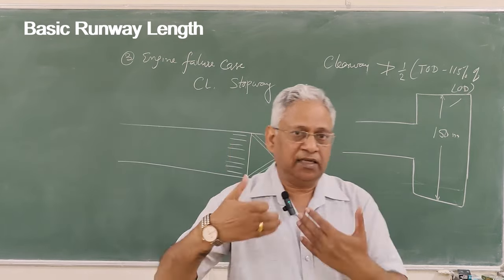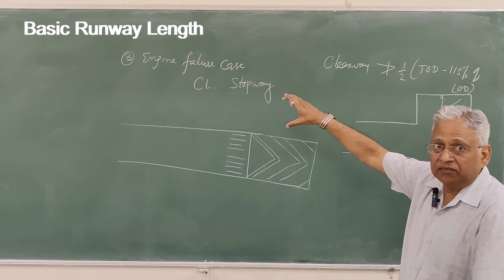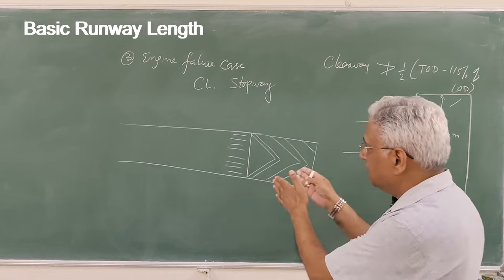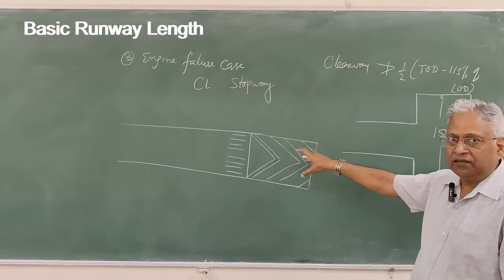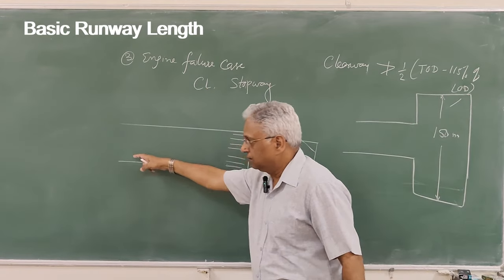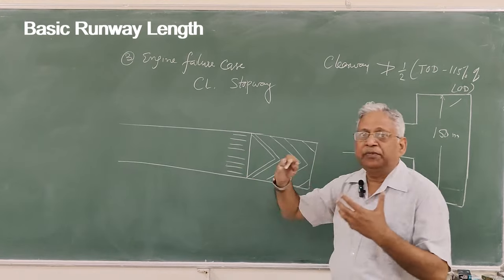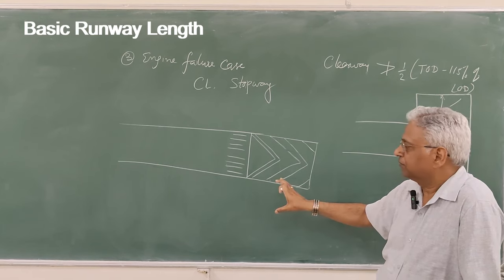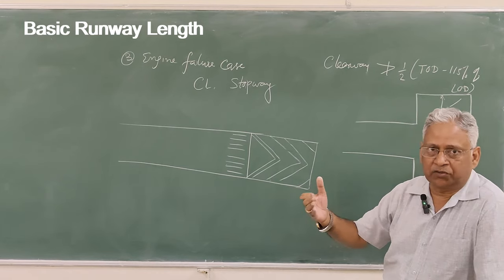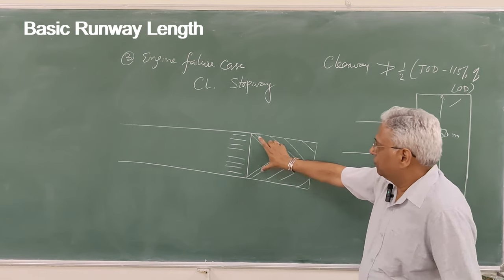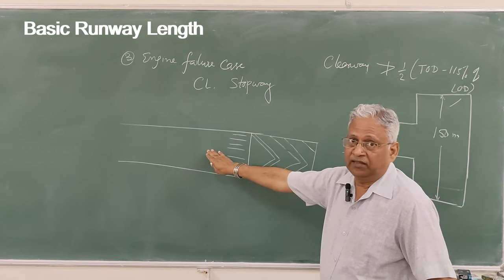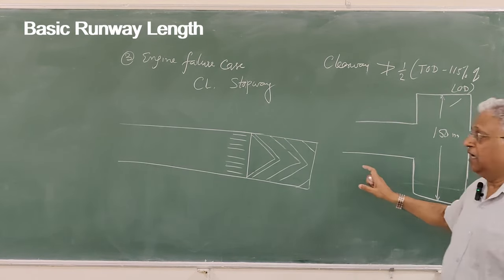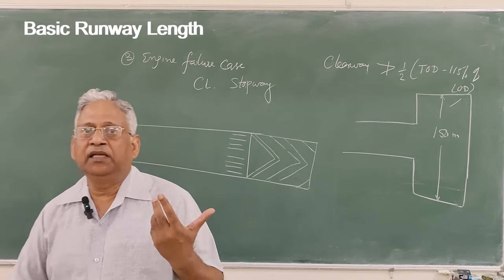The stopway can be used either to accelerate the aircraft for takeoff if it is not possible for the pilot to stop within the remaining runway length, or this distance can be used to decelerate and stop the aircraft if speed is not high. There are no clear guidelines on what the length of the stopway should be. The width of the stopway is the same as the width of the runway, whereas clearway has a minimum width of 150 meters. Stopway length can be more than or less than clearway length.